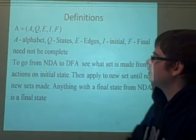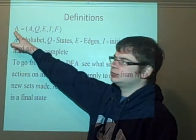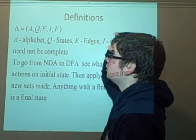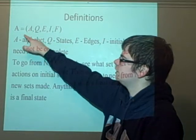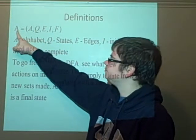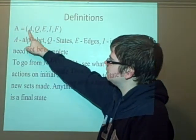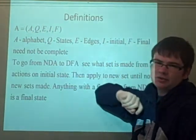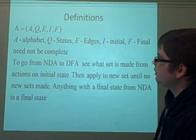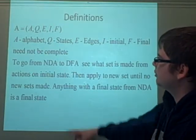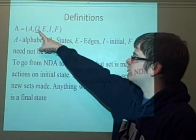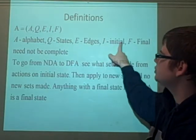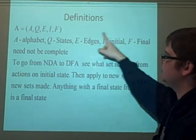First, this is meant to be a curly A, but they don't have it on the Excel. This is just a normal A. So this is our NDA which has A, Q, E, I and F. It's quite similar to a DFA in that we have an alphabet, we have the states, we have the edges, the initial states and the final states.